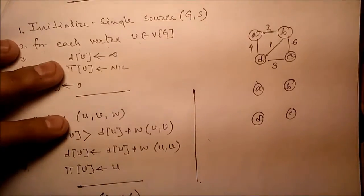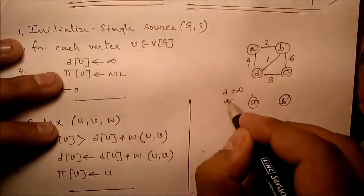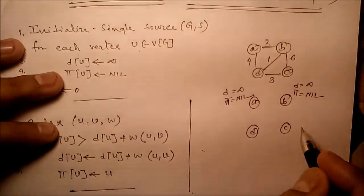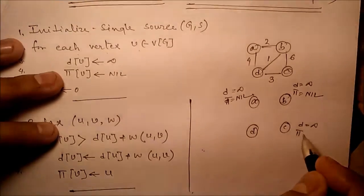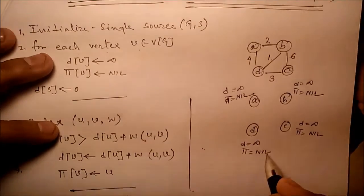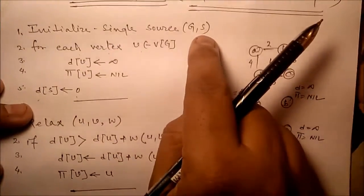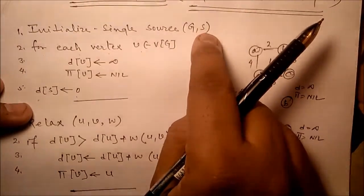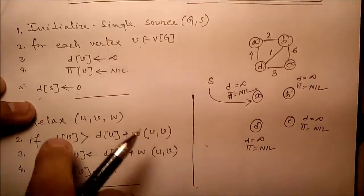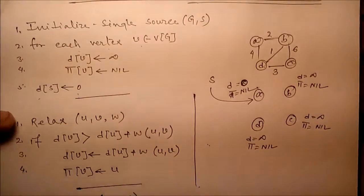For each vertex, d is set to infinite and π is set to nil. Then d[s] is set to zero, where s is the starting node. Here we assume a is the starting node, so d[a] = 0.